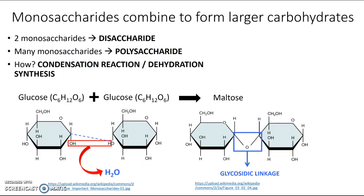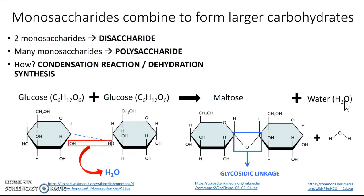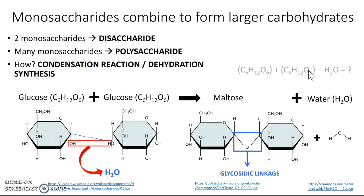We've also made a molecule of water as a byproduct. To figure out the formula for maltose: we started with two molecules of C₆H₁₂O₆ and removed water. Six plus six carbons gives 12. Twelve plus twelve hydrogens gives 24, minus two for the water leaves 22. Six plus six oxygens gives 12, minus one for the water leaves 11. So maltose is C₁₂H₂₂O₁₁.